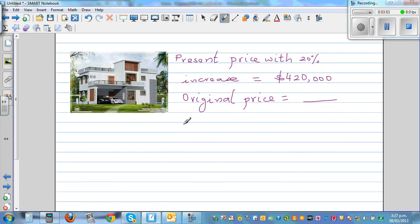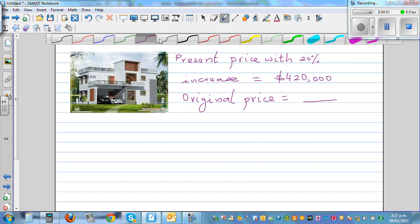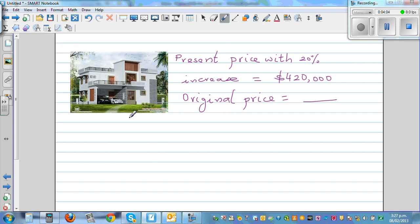This is a house. What they're saying is the present price with 20% increase is $420,000. What's the original price? So we're going to use the same strategy. Let the original price be equal to X, be equal to X dollars. So this, I can say, this is X plus 20% of X is equal to $420,000.